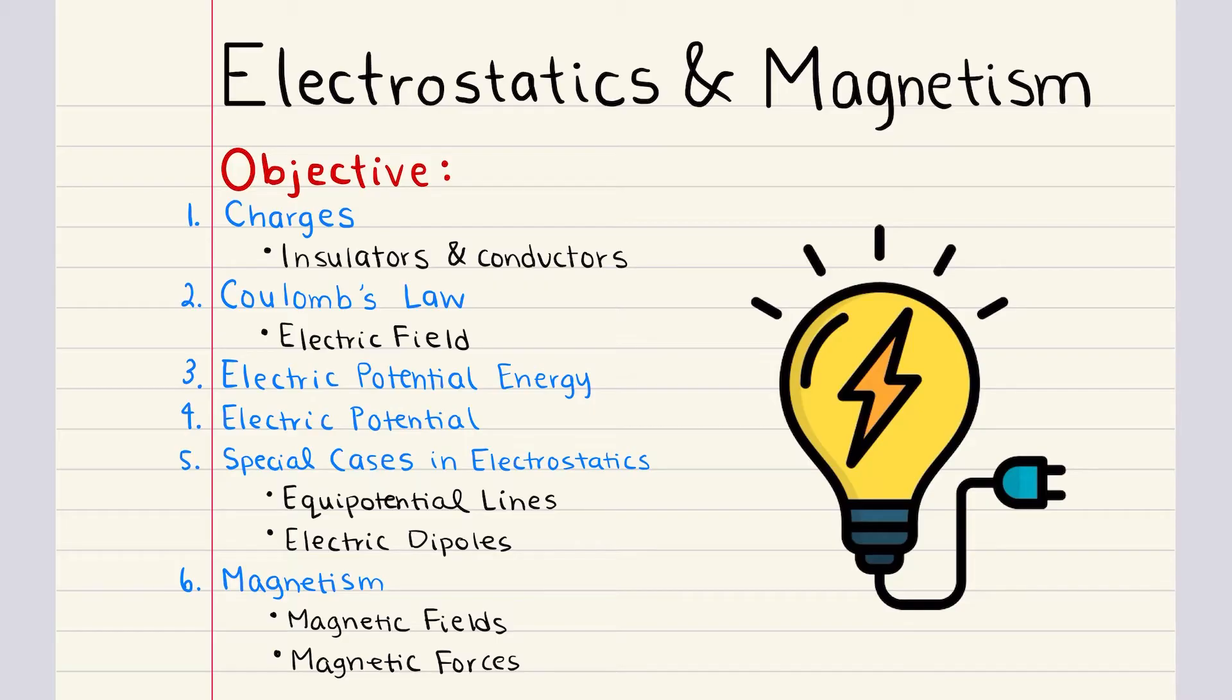Today we're going to be covering chapter 5 for our MCAT Physics and Math playlist and this chapter is titled Electrostatics and Magnetism. In this video we're going to be covering the following key objectives to help us better understand these concepts.